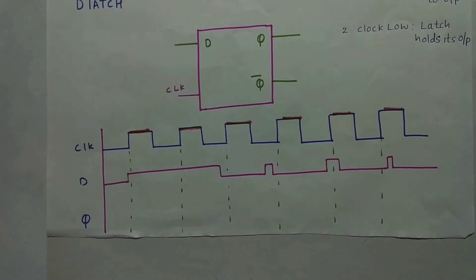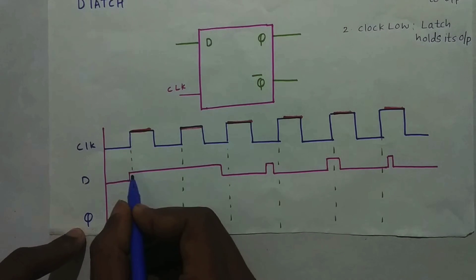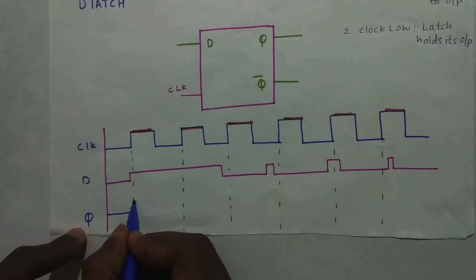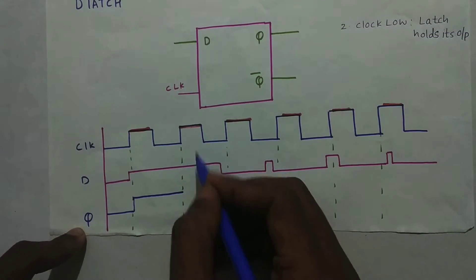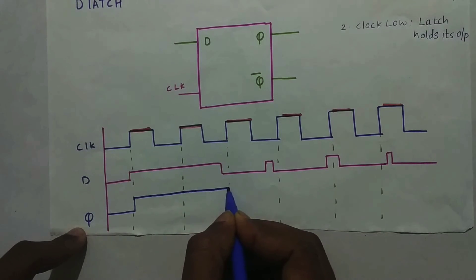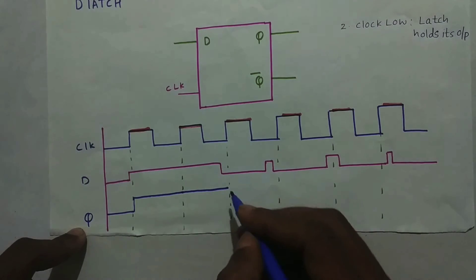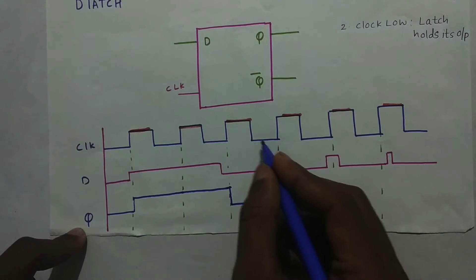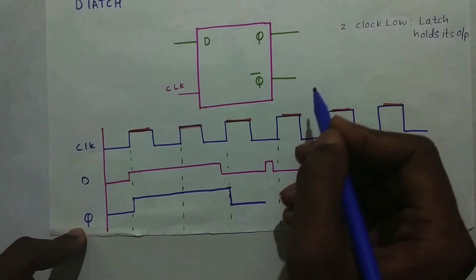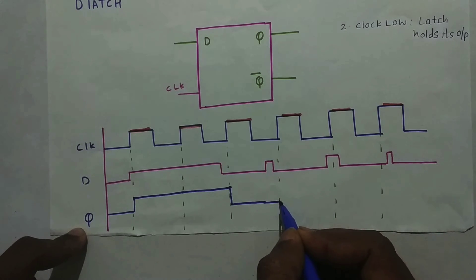Now let us draw the diagram for Q. As you can see, in this region whenever the clock is on, D is high. So D will be high in this region and will hold the same value till the next on-region. In the next on-region it checks again — D is still one, so it continues. From this time period D is zero, so Q will go to zero. It will not consider the clock-off region; it holds the previous value and waits for the next on-region where it checks — D is zero again.